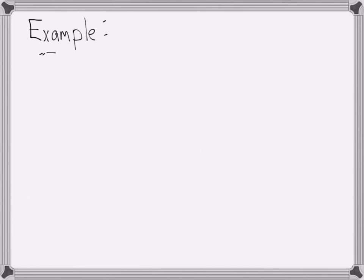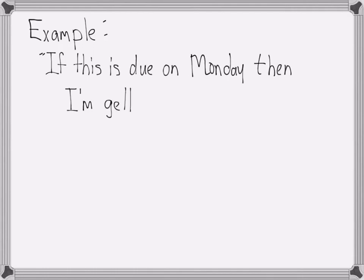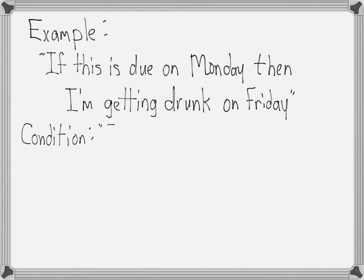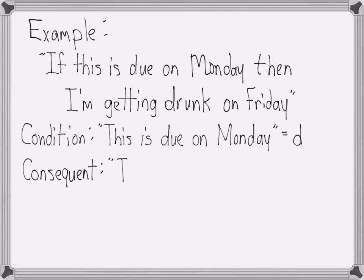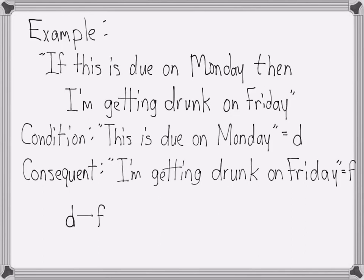For example, consider the sentence, 'If this is due on Monday, then I'm getting drunk on Friday'. The condition is 'this is due on Monday'. We'll call that d. The consequent or result is 'I'm getting drunk on Friday'. We'll call that f. In logical notation, that's d implies f. Notice how much simpler the logical version is than the original sentence.